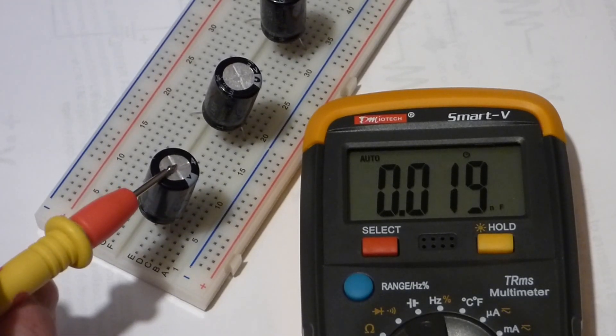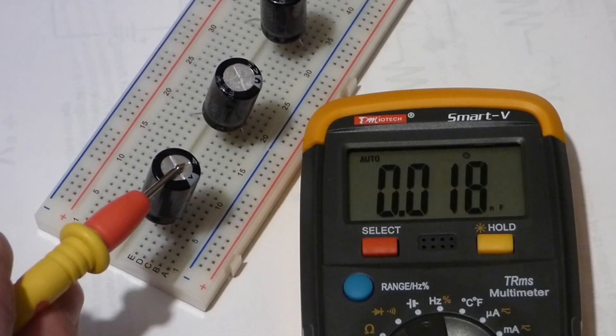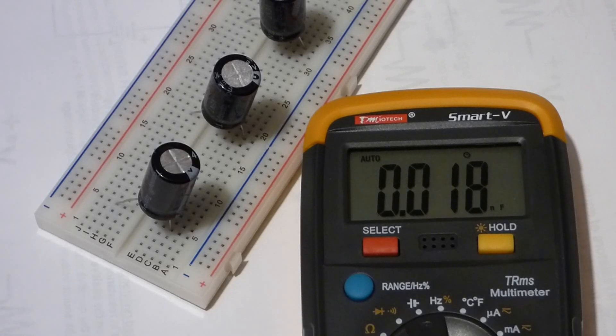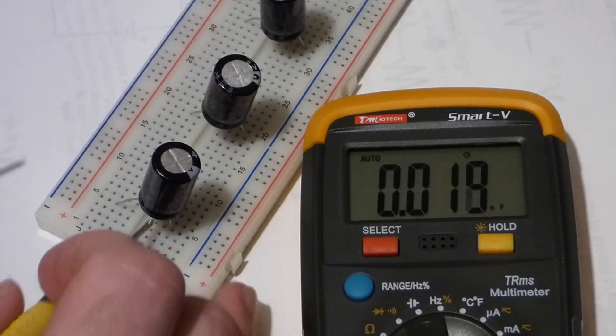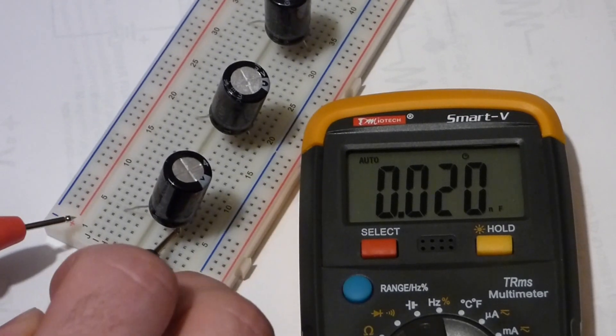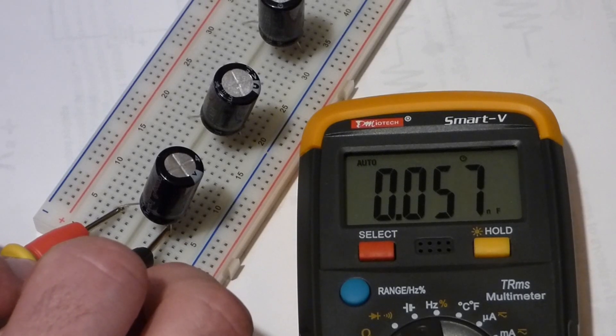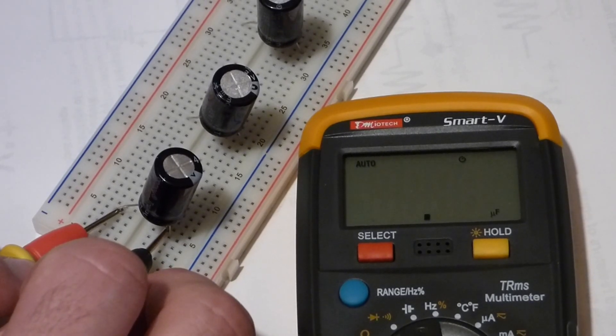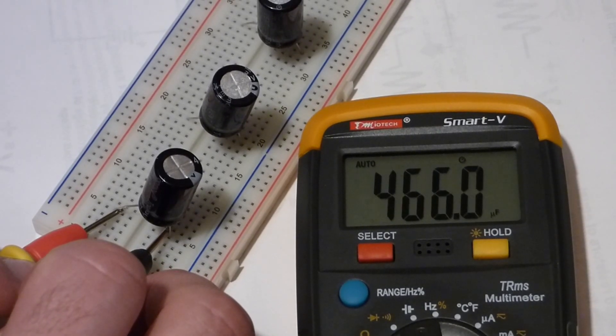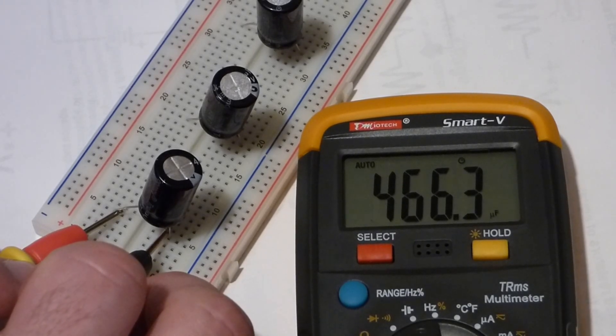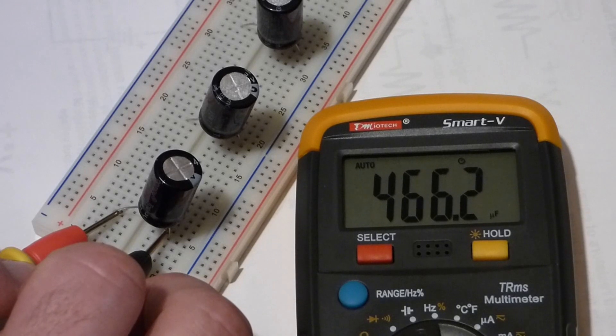Again, black goes to negative with these capacitors and red goes to positive. We'll wait for it to get a reading. There you can see we're at about 466. Looks like it's close to 466.